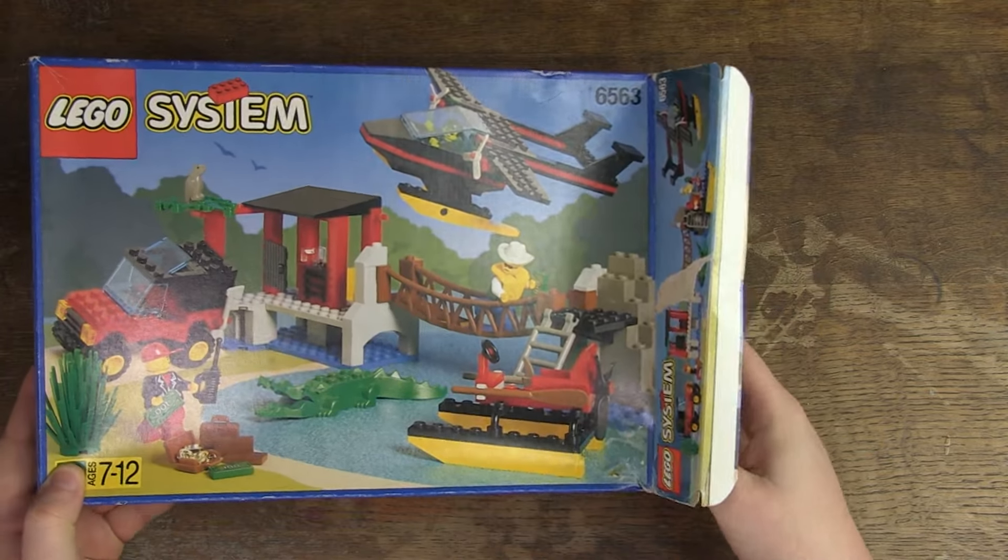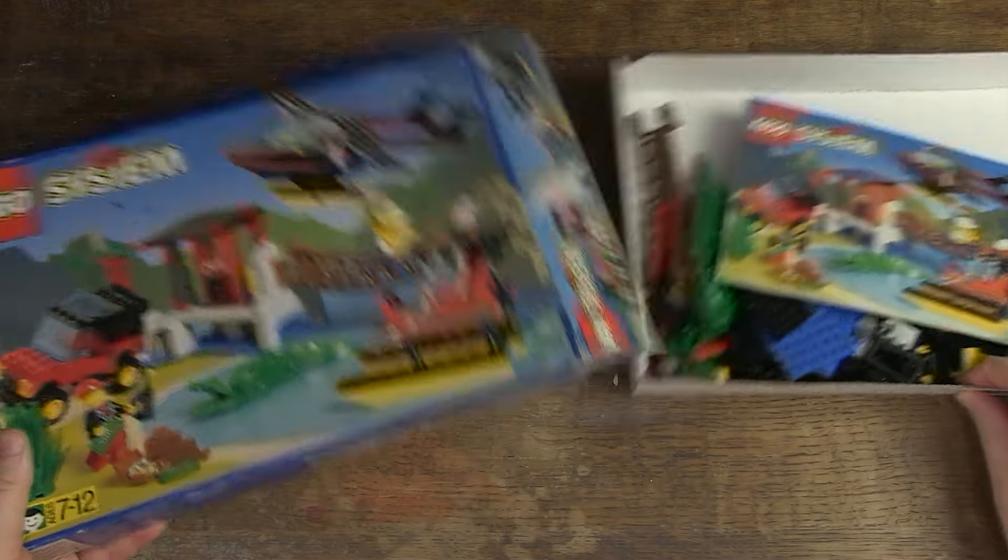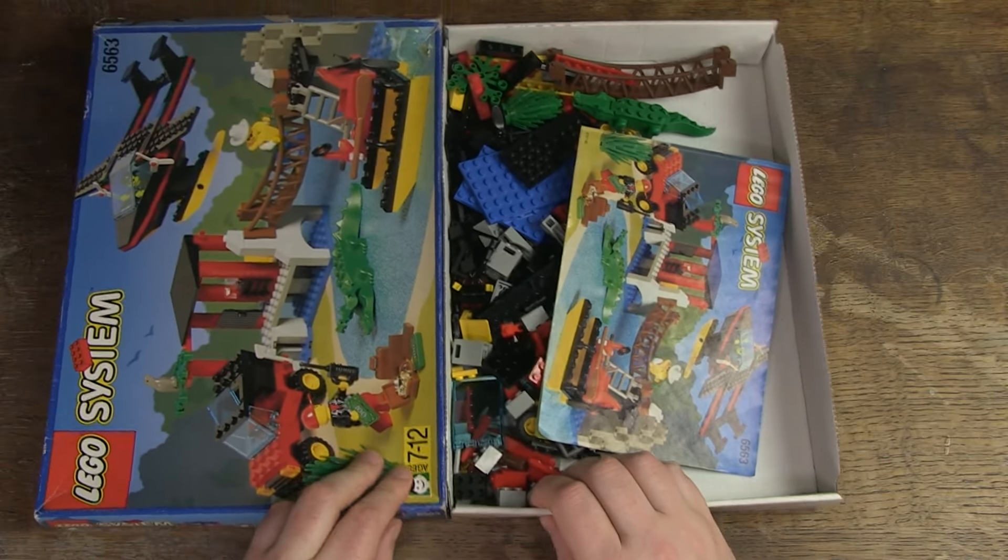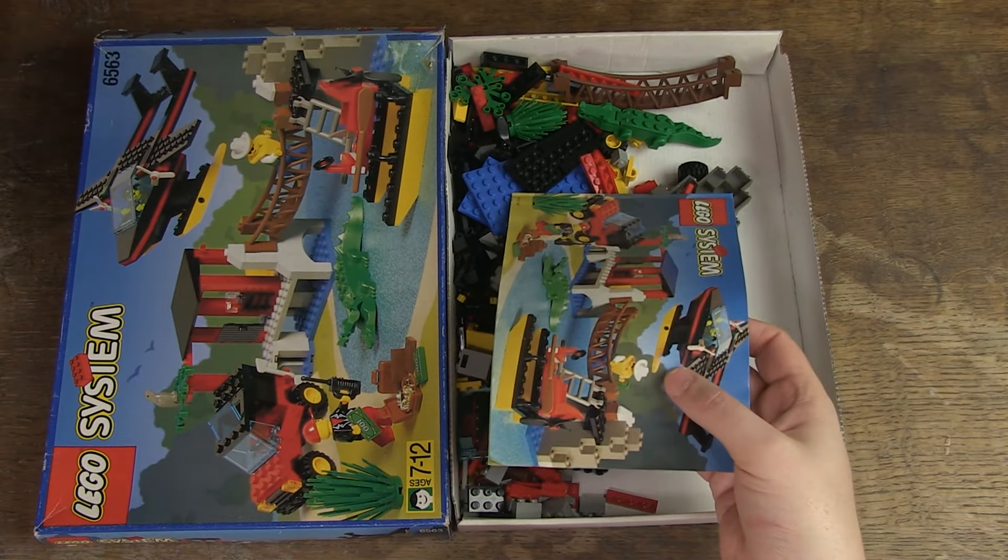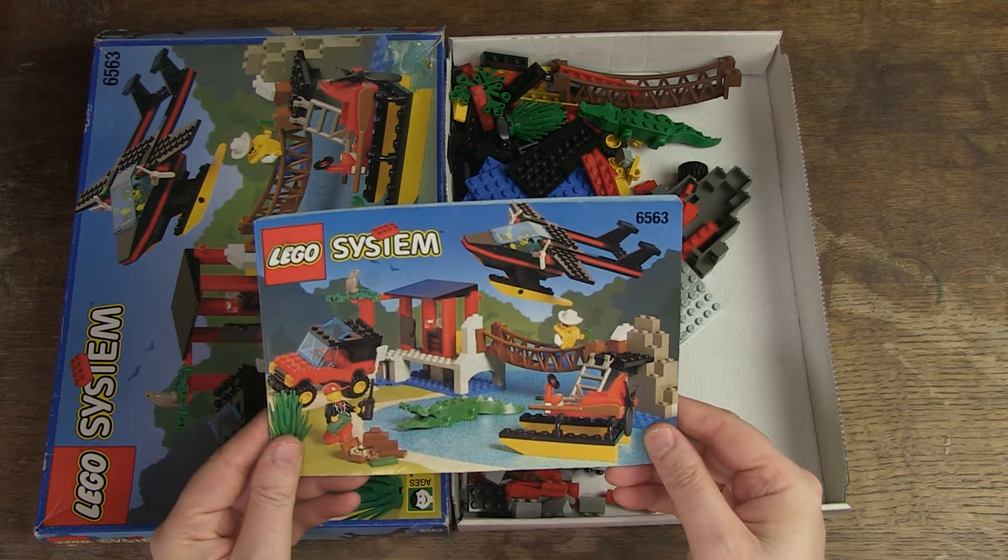It is not a classic Legoland box, it has the word system on it. You have to open the sides and slide out the inlay. It is made from cheap, neutral white cardboard. The manual is also included and still looks very good after almost 30 years.